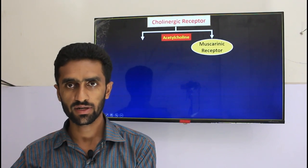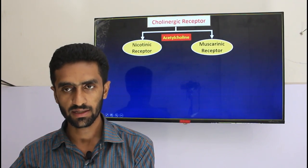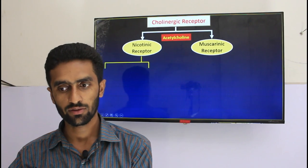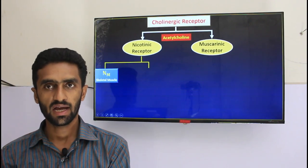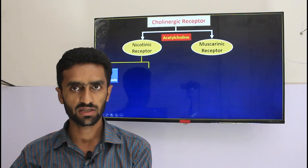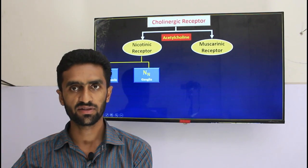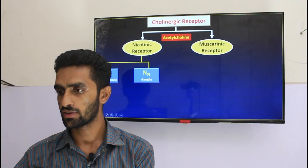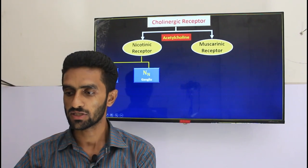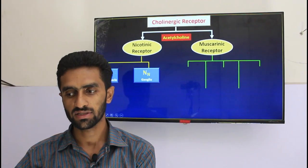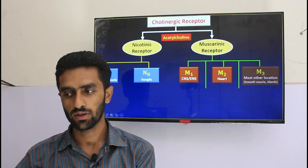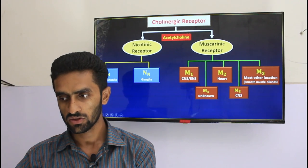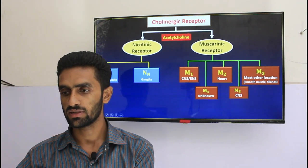We have two types: muscarinic receptors and nicotinic receptors. In the nicotinic type, we have two subtypes: NM, associated with skeletal muscle, and NN, which is mostly neuronal or ganglionic. The muscarinic receptor has five subtypes: M1, M2, M3, M4, and M5.